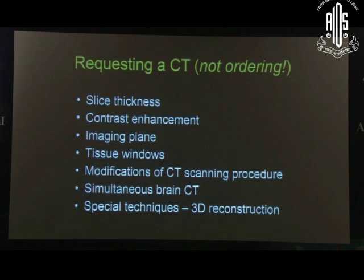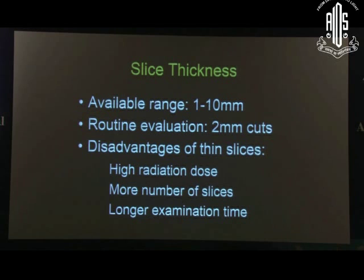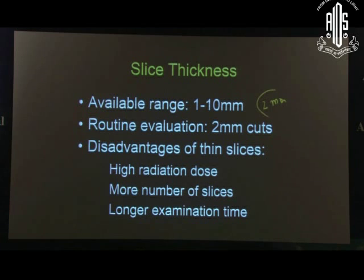When you ask for a CT scan, you request — because the ego of the radiologist has to be satisfied. You must specify certain parameters. You can't simply write 'CT scan of the orbit' — the technician will do exactly what he thinks is right. Slice thickness: the available range is 1 to 10 millimetres. If somebody does a 5 mm scan for the orbit, that is suboptimal because a tumour 4.5 mm wide might be missed. For the orbit, 2 mm slice thickness is considered good. For optic pathway pathology, 1 mm slice thickness is good.